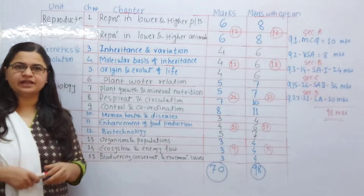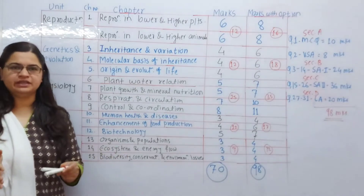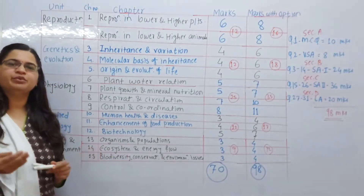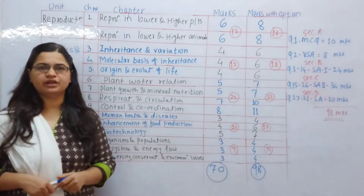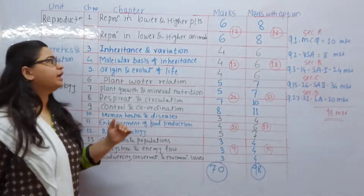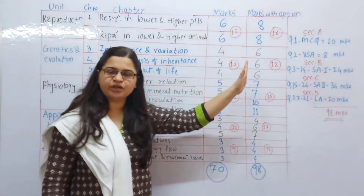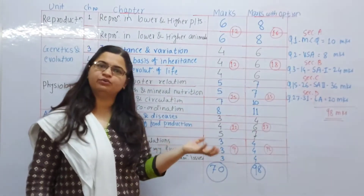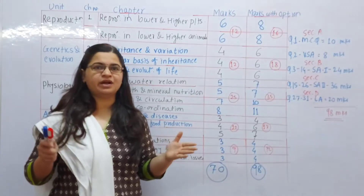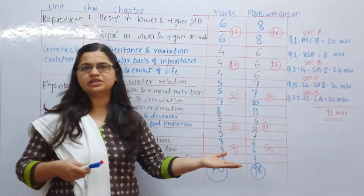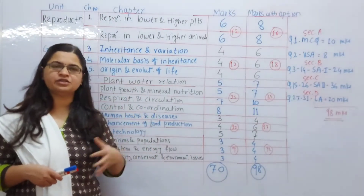This year some chapters have been added from the previous course in Chapter 1. There is reproduction content — reproduction and its products, reproduction and animals. This is a total of 12 marks for the unit. If you do just two chapters you can get 12 marks. We will discuss in another session which questions to focus on, but this is a very important unit.